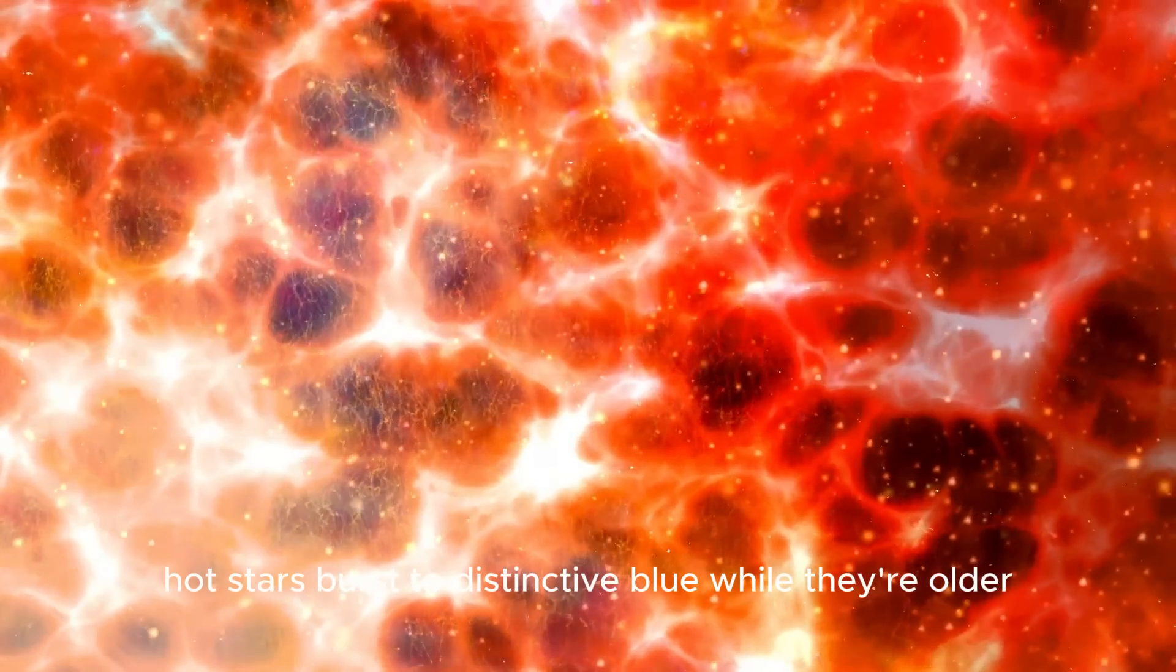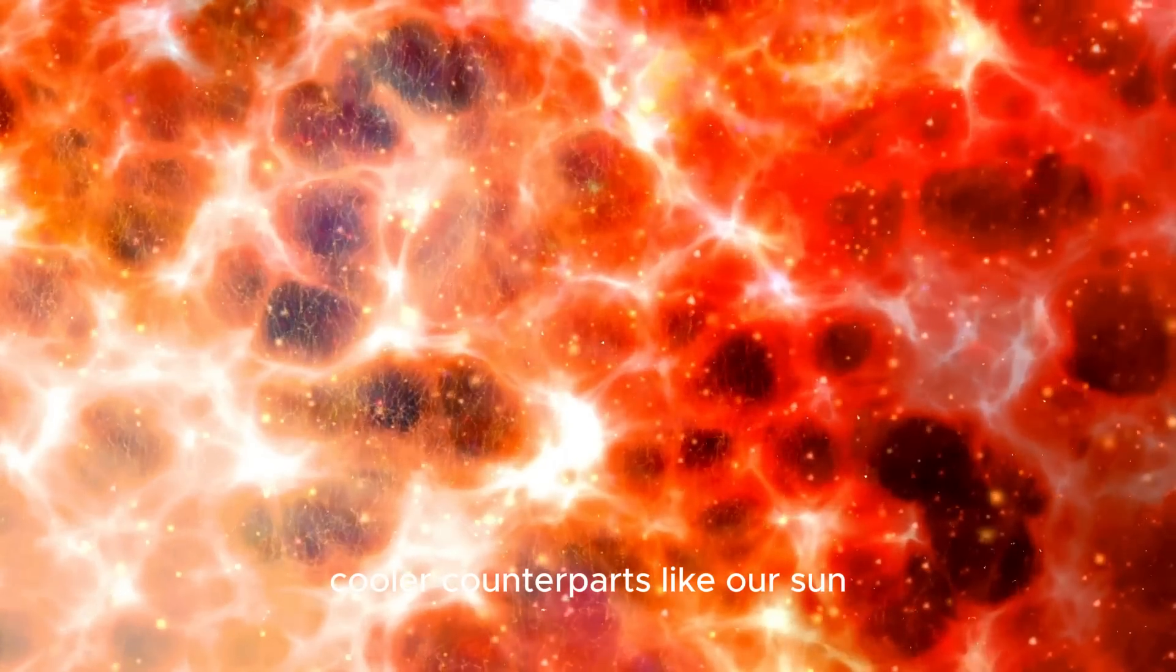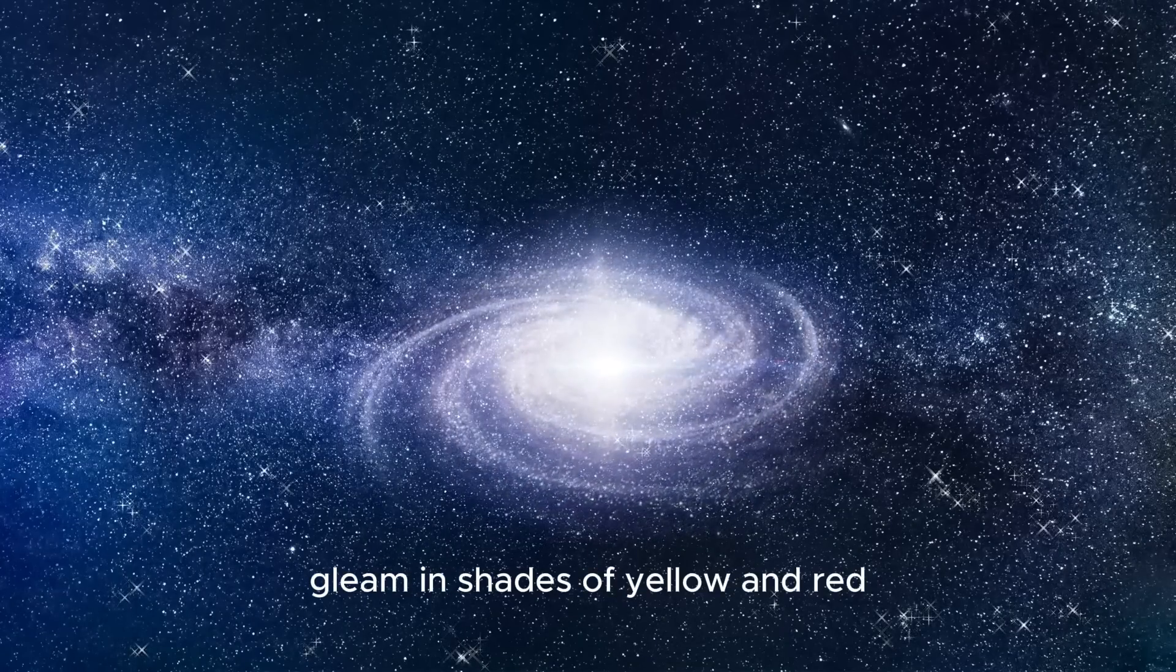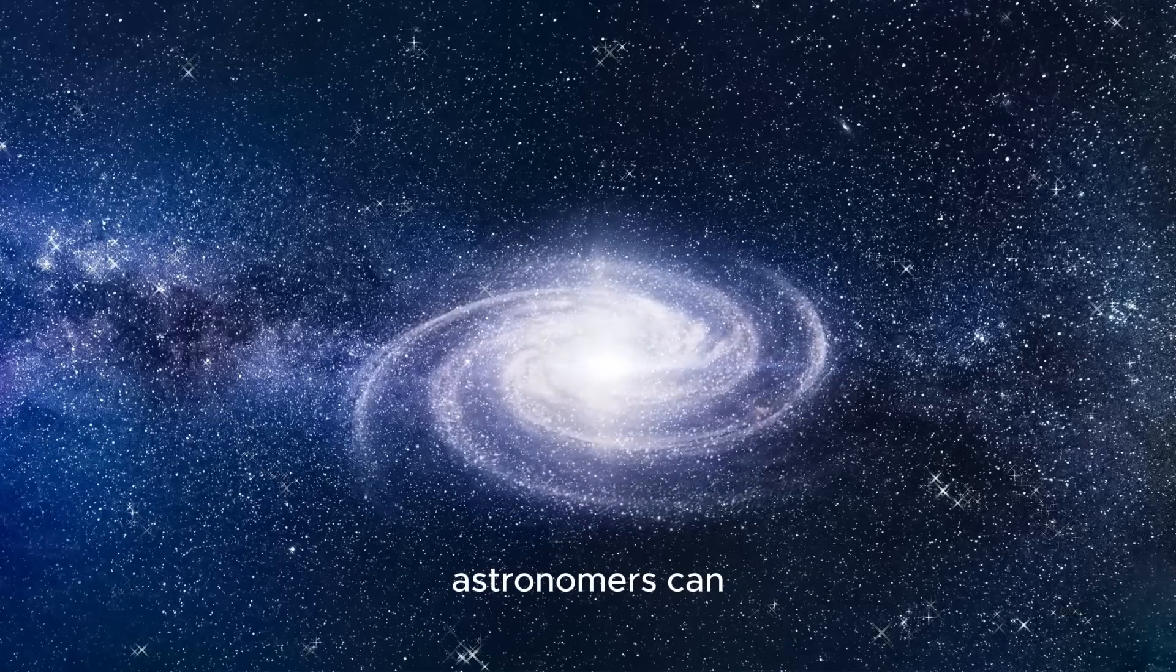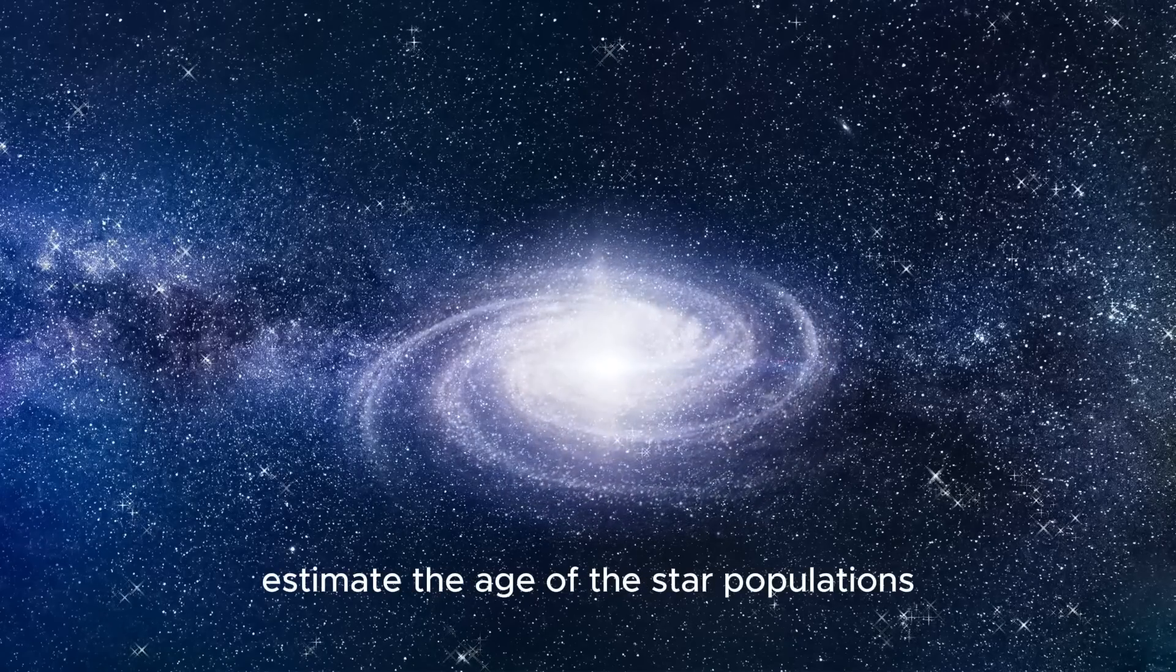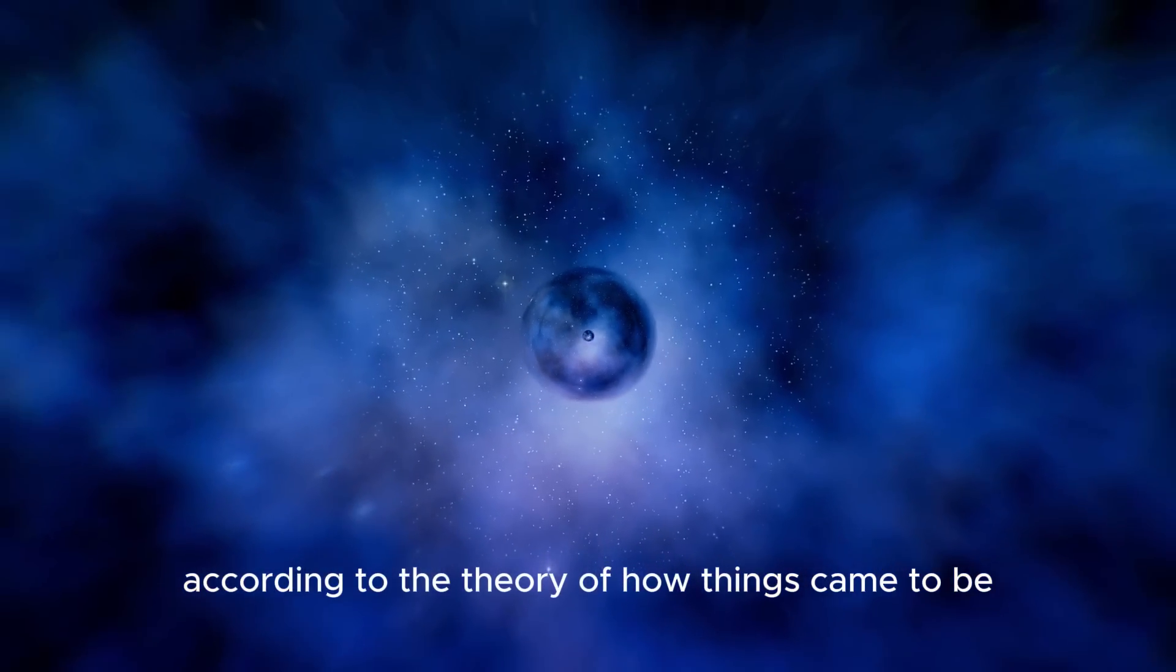Young, red-hot stars burst a distinctive blue, while their older, cooler counterparts, like our sun, gleam in shades of yellow and red. By analyzing these variations, astronomers can estimate the age of the star populations in these distant galaxies.